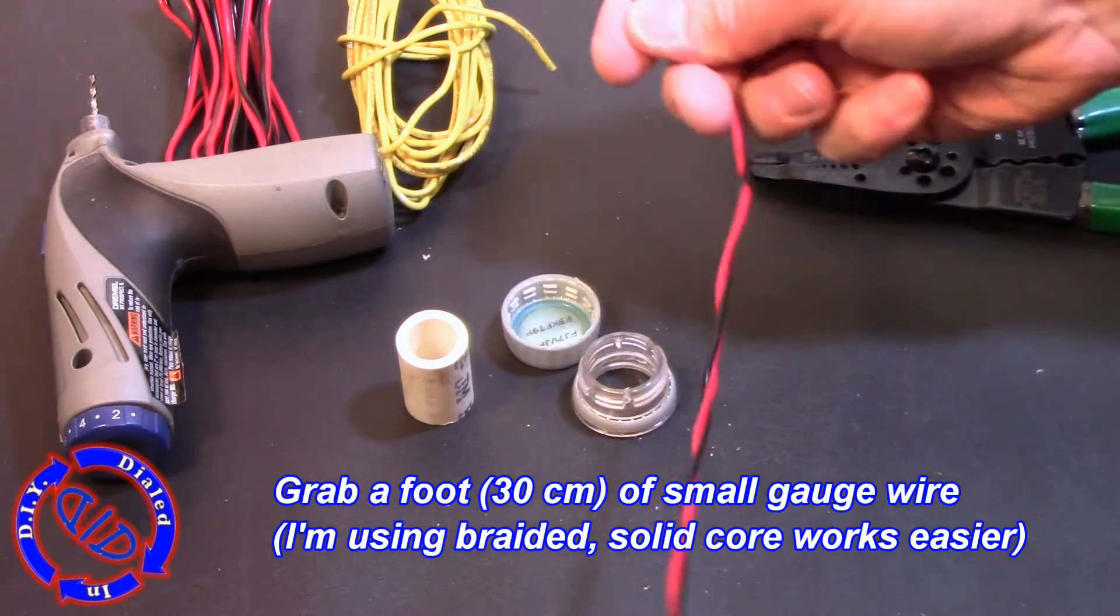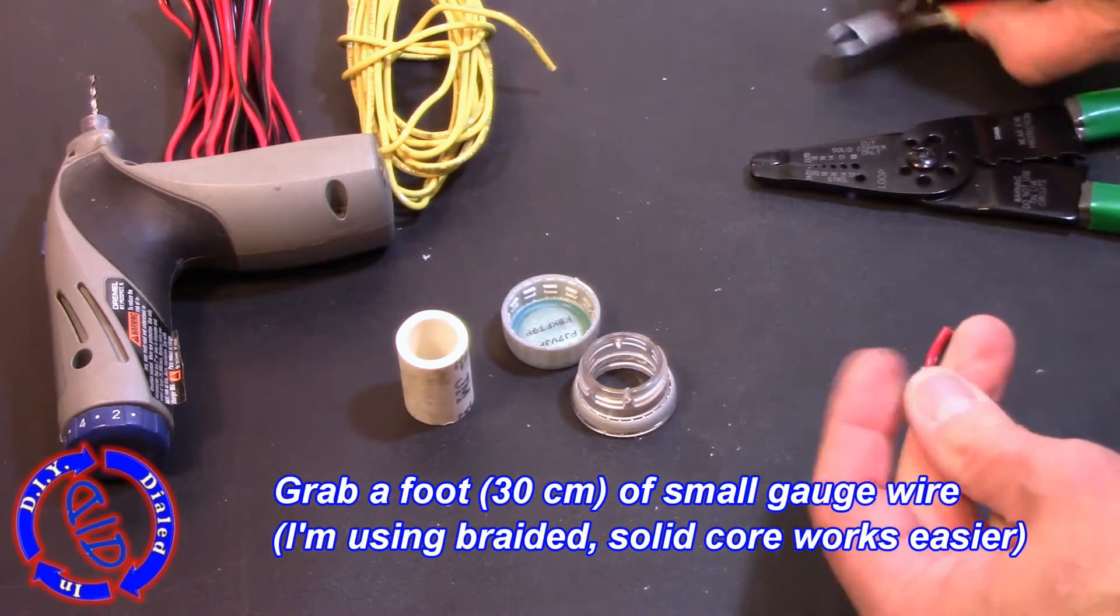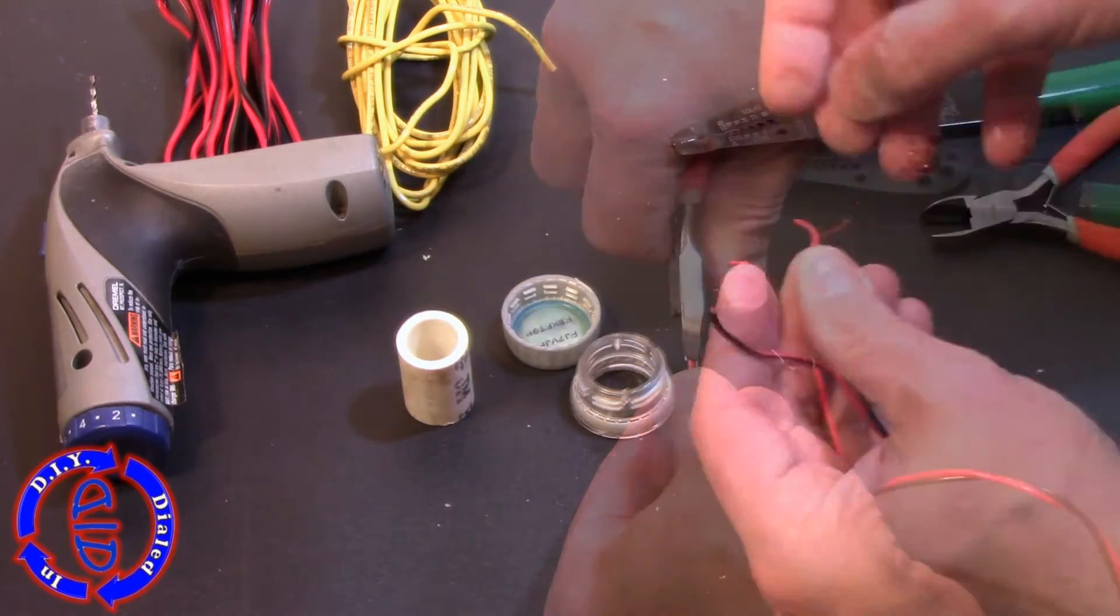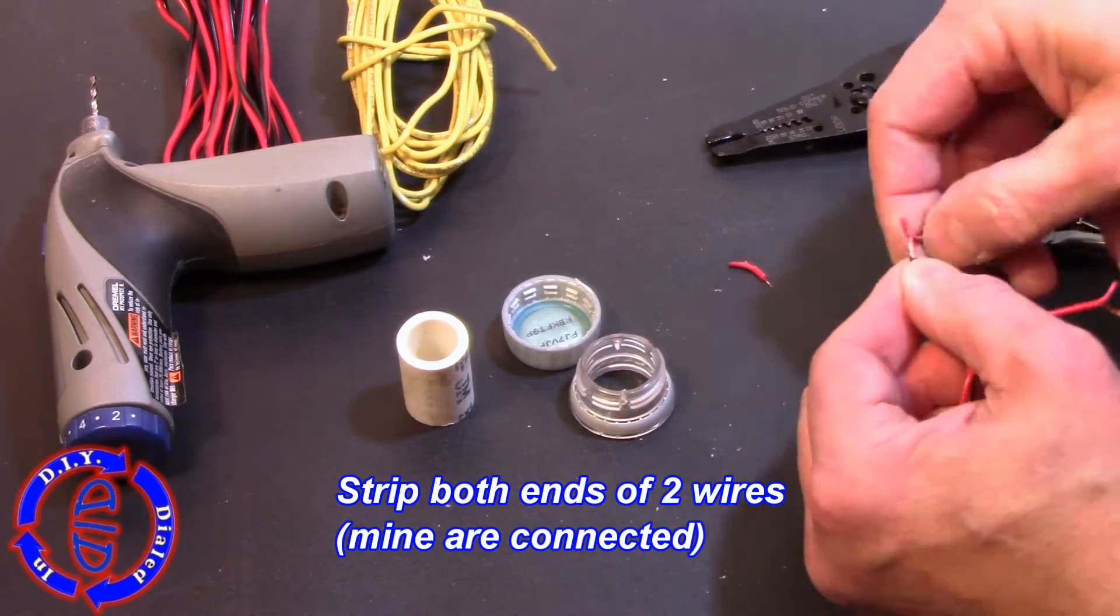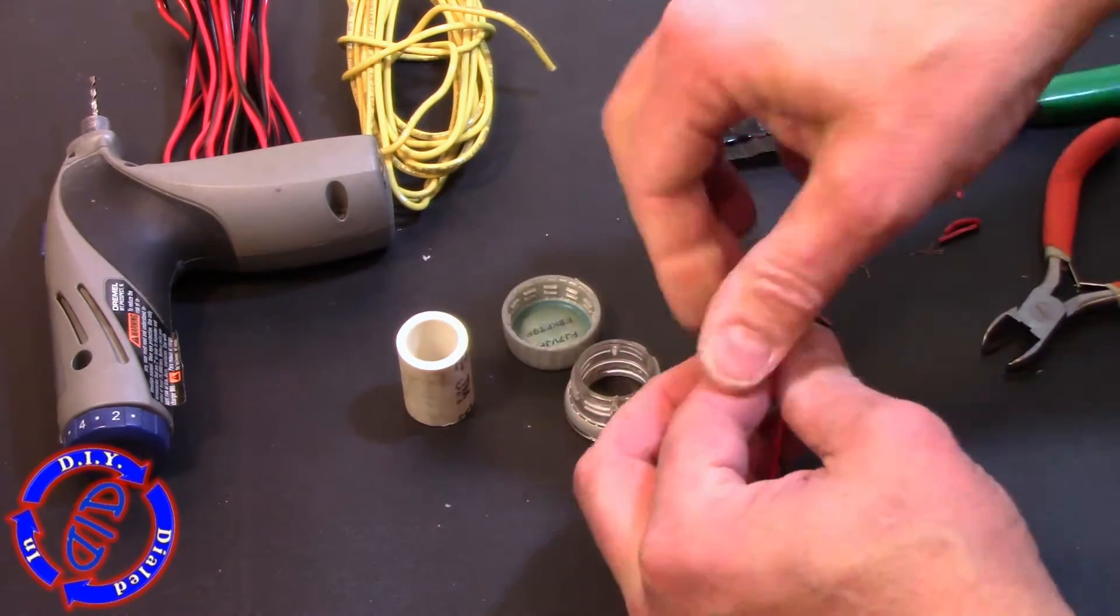Now you need some small gauge wire and you need to strip the ends off of each. I actually am going to go ahead and use braided wire here. It is harder to use for this but it works fine as well. If you have solid core wire you're gonna find that it's much smoother of an operation once you complete your switch.